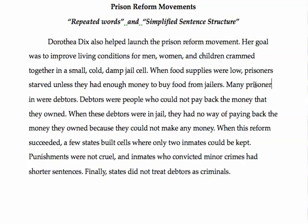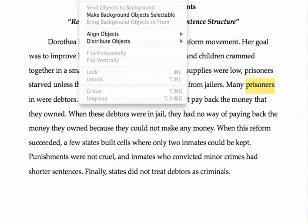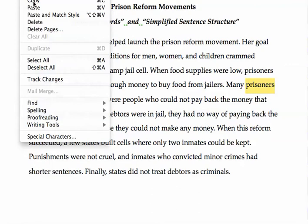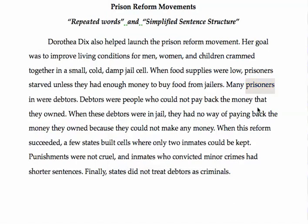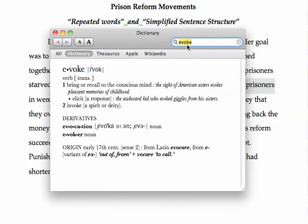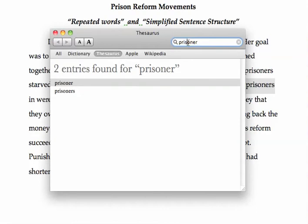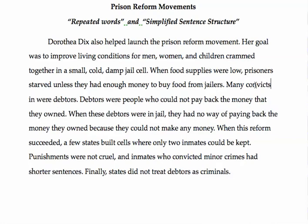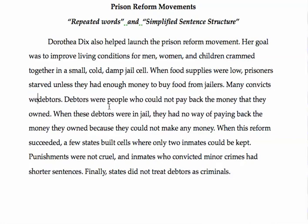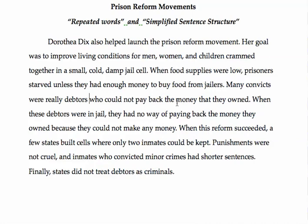Many — I could use the word 'prisoners,' but I've just told you to be careful about doubling up words. So what I might do in a situation like this is call up the dictionary function and use it to find related words. Many criminals, convicts — many convicts were really debtors, criminals and convicts who could not pay back money that they owed.